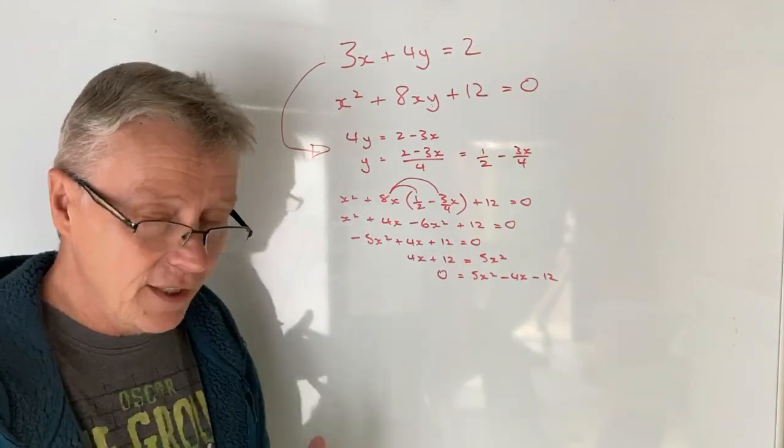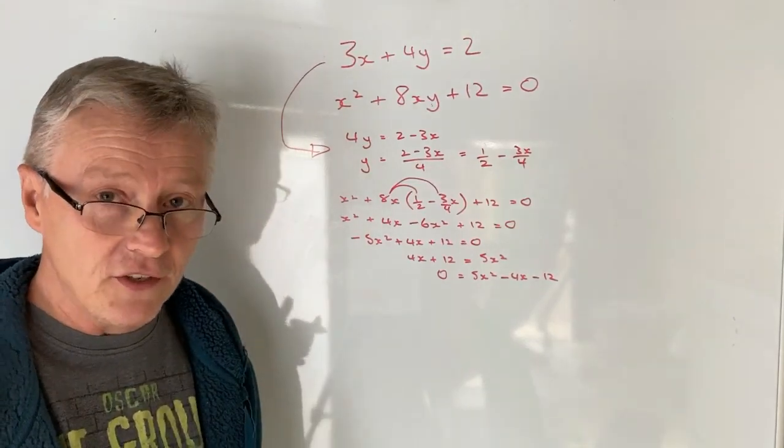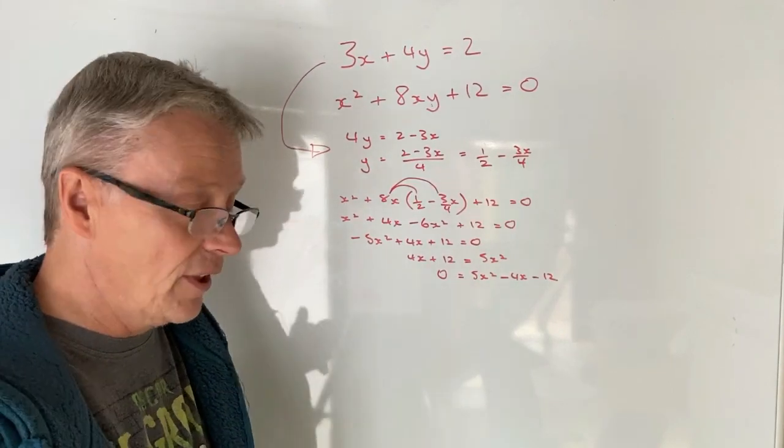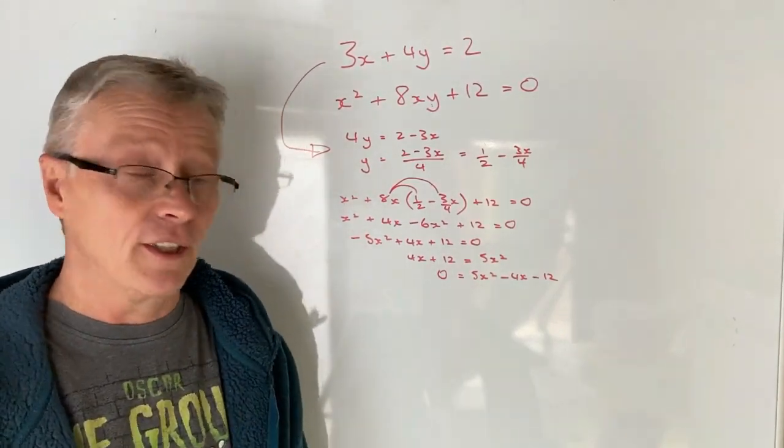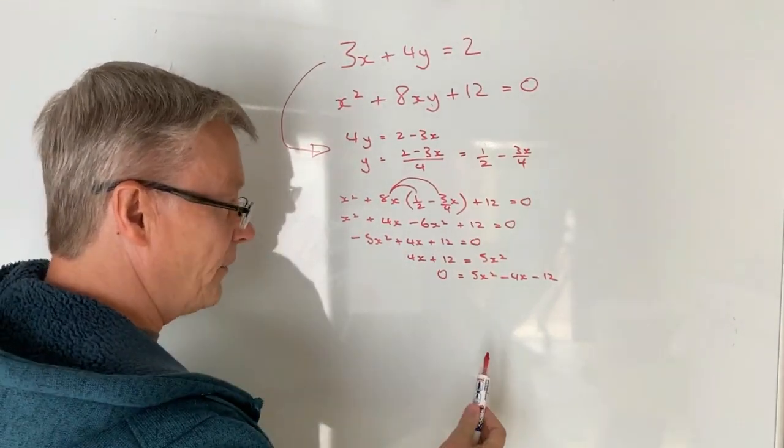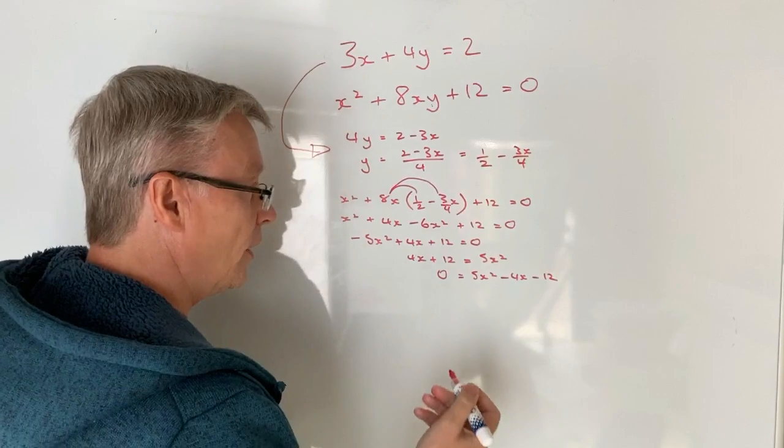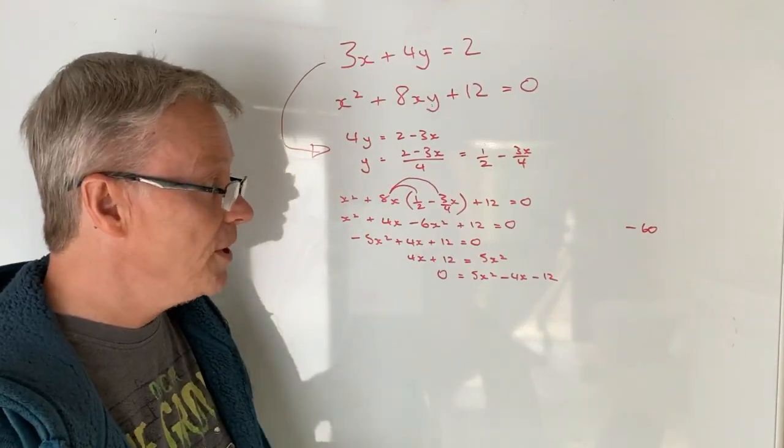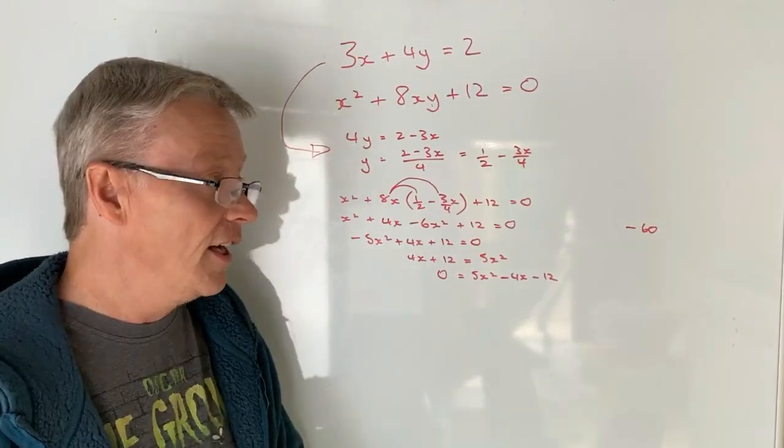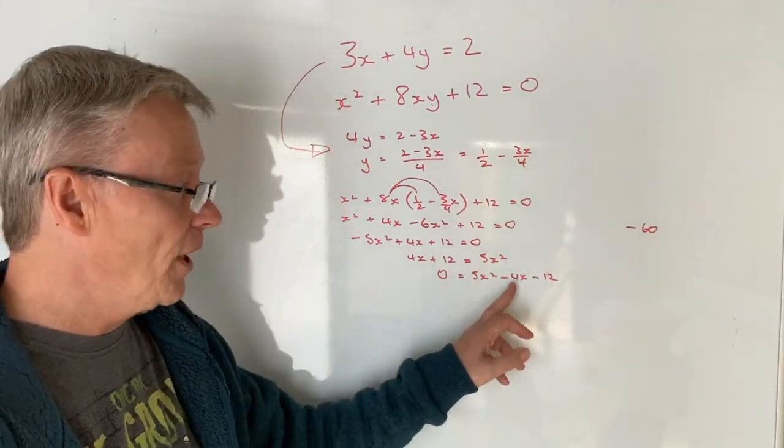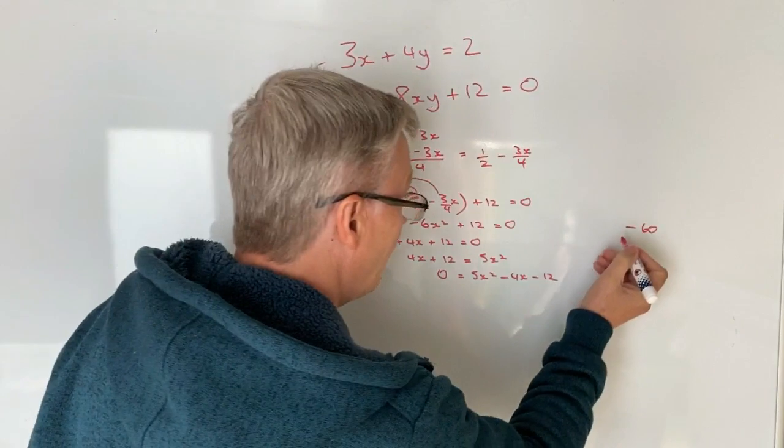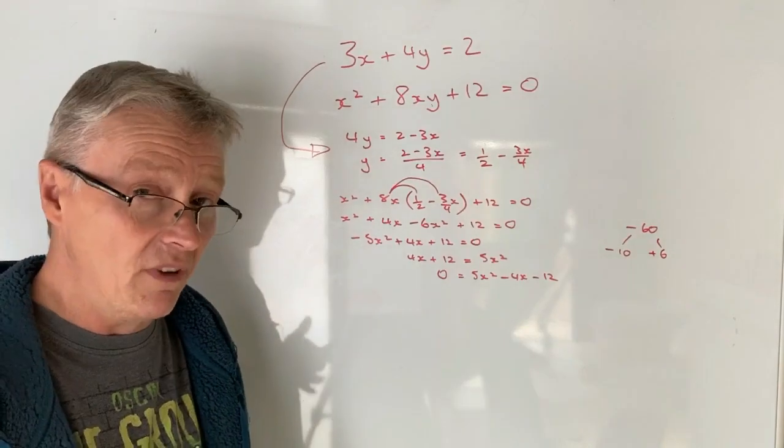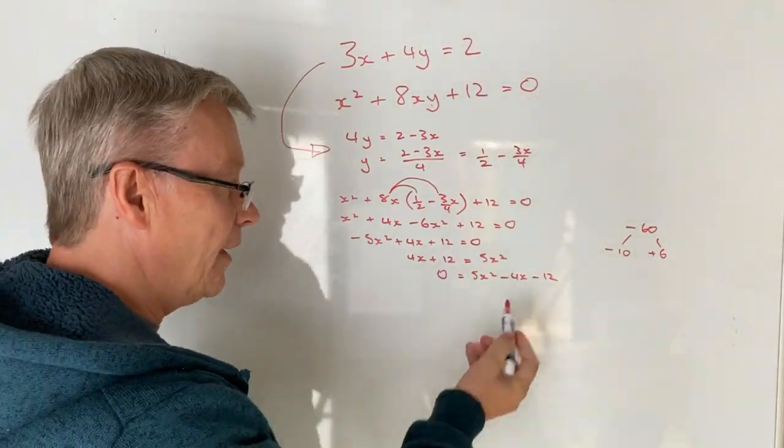Now I do this in a particular way and you'll see on my other videos it seems to kind of work for me. I'm aware that there are other methods of doing this. You might choose to do something like a quadratic formula which is perfectly good. In my particular case what I'm going to do is I'm going to multiply 5 and minus 12 together and get minus 60. Now what I'm looking for is two numbers that when I multiply them together make minus 60 and when I add them together make minus 4. Well those two numbers are going to be minus 10 and plus 6 because if I multiply those two I get minus 60. If I add them I get minus 4.